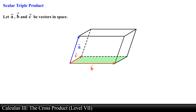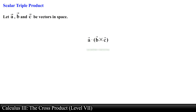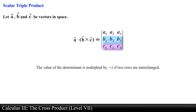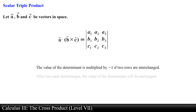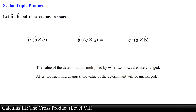If vector A, vector B, and vector C are in R cubed, then vector A dotted with the cross product of vector B and vector C is called the scalar triple product or triple scalar product. The scalar triple product can be written in determinant form by using the components of the vectors. Note that the value of the determinant is multiplied by negative 1 if two rows are interchanged. After two such interchanges the value of the determinant will be unchanged, so the following triple scalar products are also equivalent.